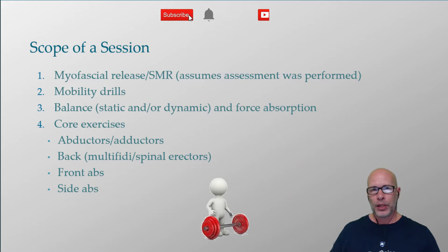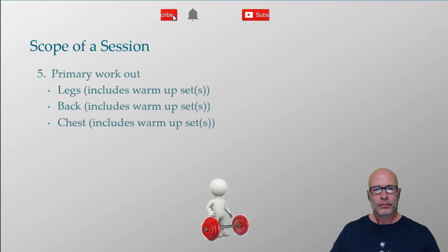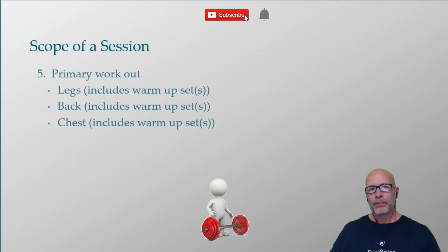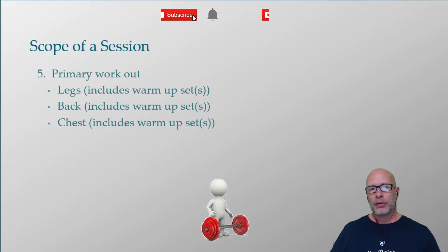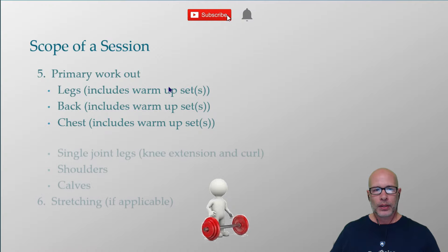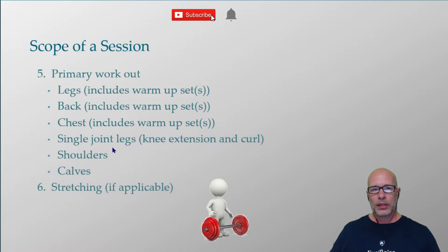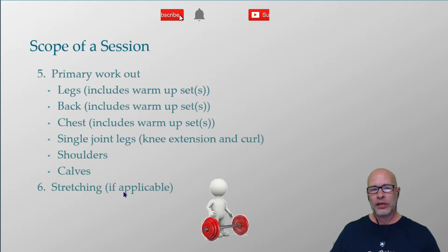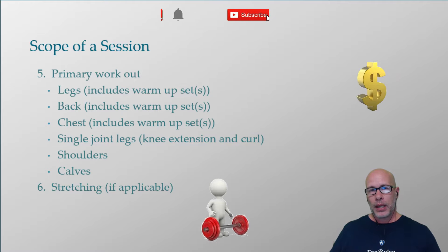Then obviously some abdominal exercises as well. From there we move on to the primary workout. When performed properly, the self-myofascial release, mobility drills, and core warm-up typically take about the first 20 minutes of the session, which leaves about 40 minutes for the primary workout. That includes three large muscle groups — legs, back, and chest — and then smaller muscle groups such as single-joint legs like knee extensions and curls, shoulders, and calves.